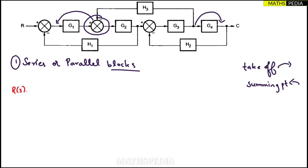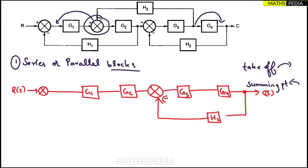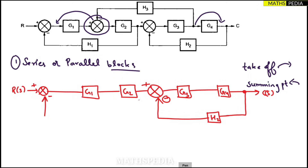In the redrawn diagram: R(s) is followed by a summing point, then G1, then G2, then another summing point, then G3, then a takeoff point which I'll shift, then G4, then the output C(s). From the output side one feedback loop goes to this summing point with a minus sign. From another summing point, feedback goes toward the output of G2, where H1 is sitting.